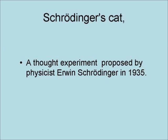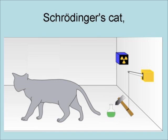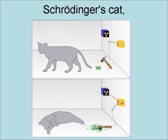Schrödinger's cat is a thought experiment proposed by the physicist Erwin Schrödinger in 1935. It involved placing a cat in a sealed box with a vial of poison that would kill the cat if broken, along with a radiometric material and a Geiger counter set to drop a hammer on the vial of poison if it detected a radiometric decay event. When the cat is later observed, it is found to be either dead or alive.